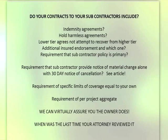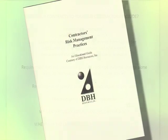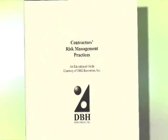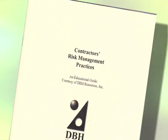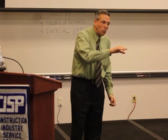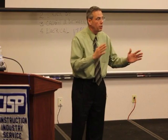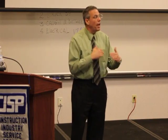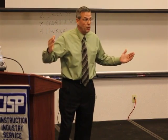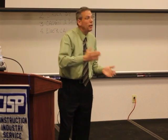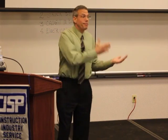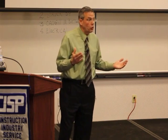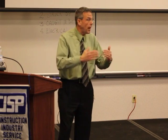Is there a requirement of specific coverages and limits equal to your own? Is there a requirement of per project aggregate? I've given you a yellow book that's a good reference for risk transfer — it may be a little outmoded in some areas but it's a good outline for what you should be looking for in your subcontract agreements. It's amazing how many subcontract agreements don't specify amount of insurance, notice of cancellation, or that the additional insured endorsement has to provide not only premises operations but products and completed operations as well.